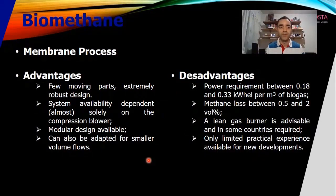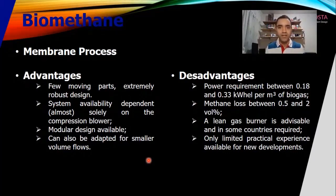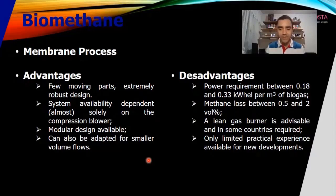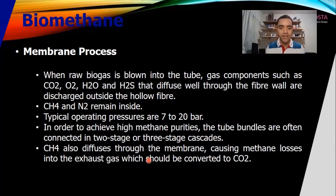An advantage of using the membrane is that it doesn't have moving parts. You just need a source of pressure, and remember that in the landfill or in the digester, the operating pressure is around atmospheric. So to move the gas we need some kind of rotating equipment — we use a blower in many cases — to build enough pressure to surpass the pressure drop of the system. The membrane most often operates in a range of 7 to 10 bar, and because of that we need a blower or a compressor.